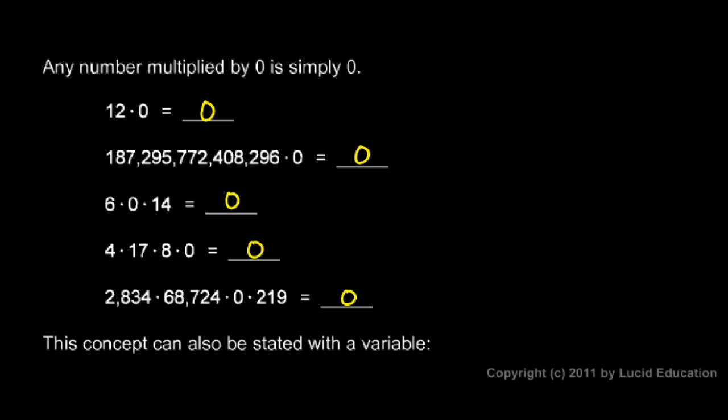The idea that any number multiplied by 0 is 0 can be stated with a variable. I can say a times 0 equals 0 for any number a.